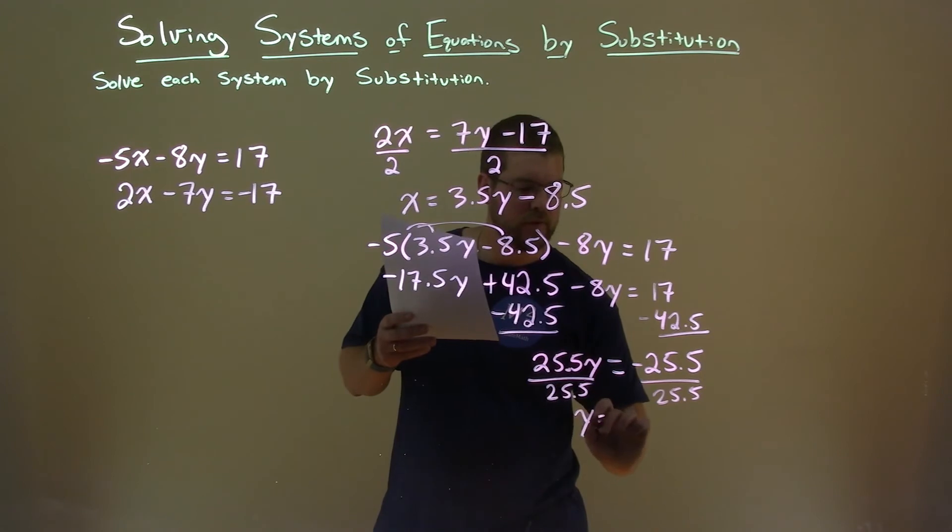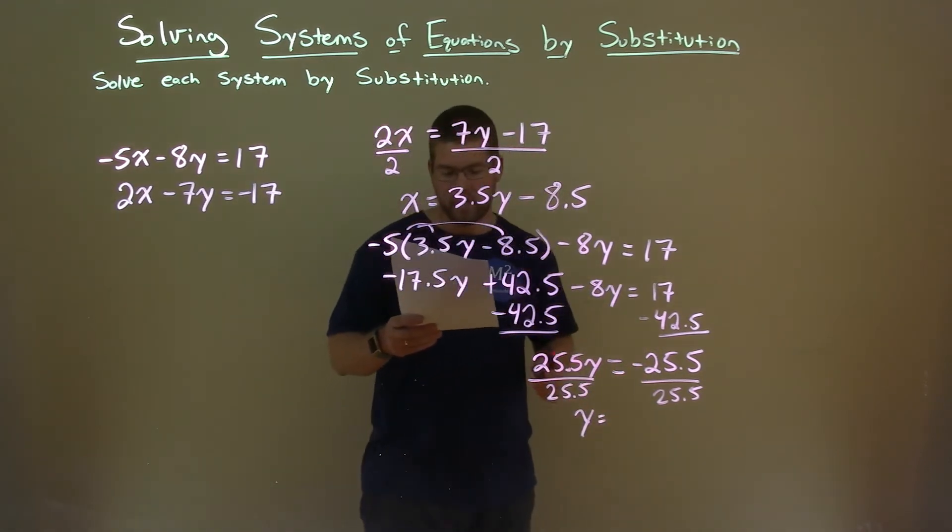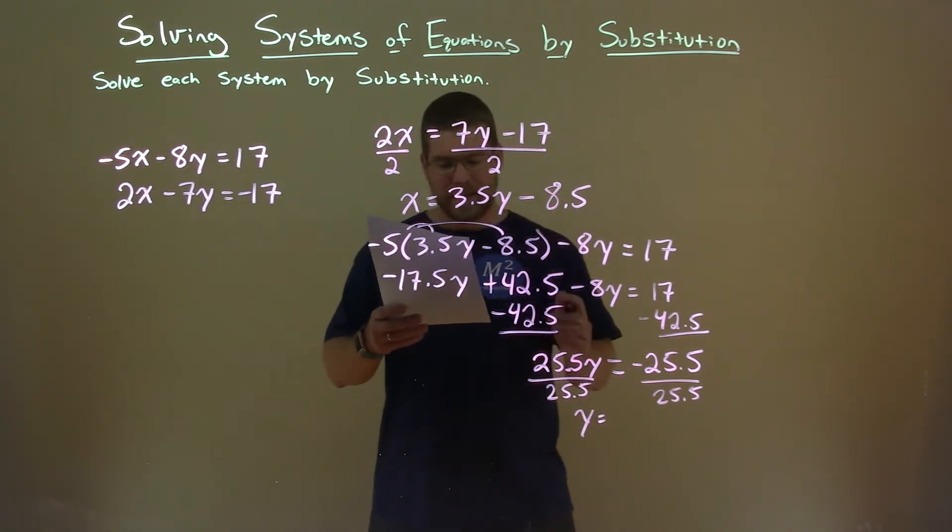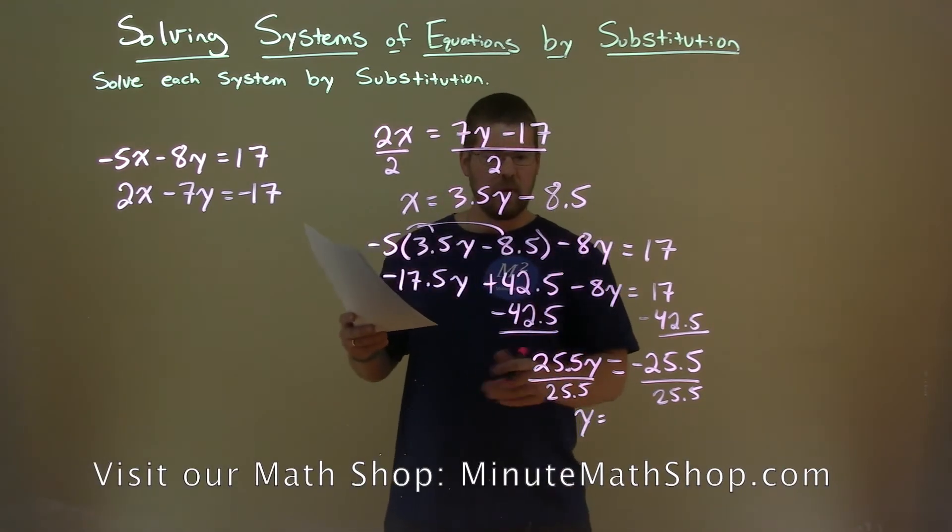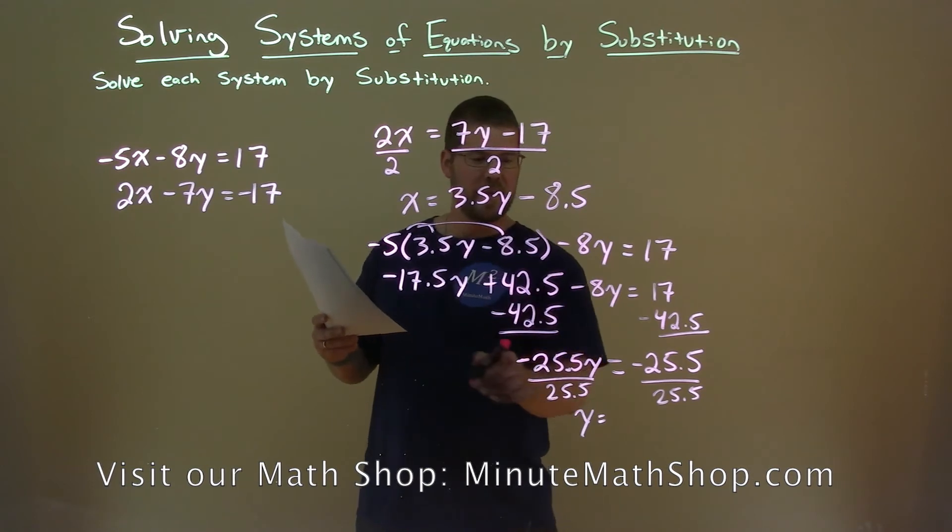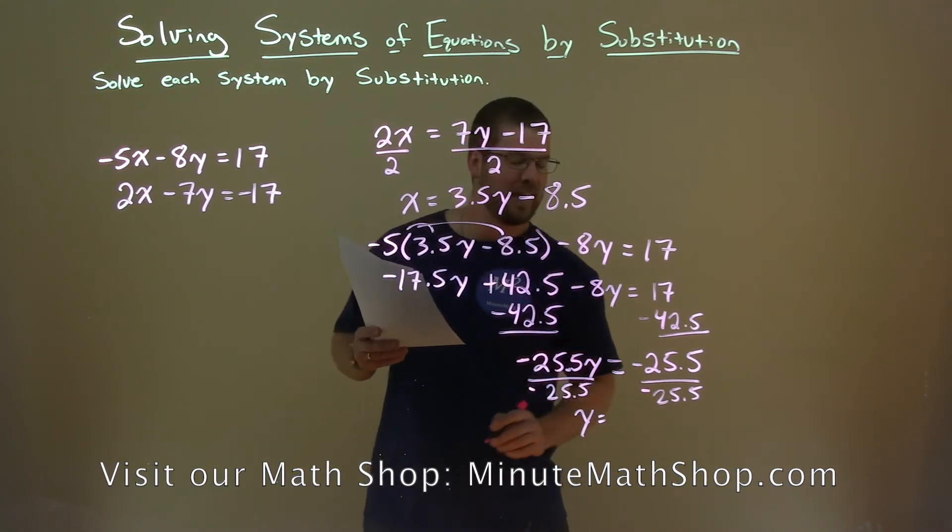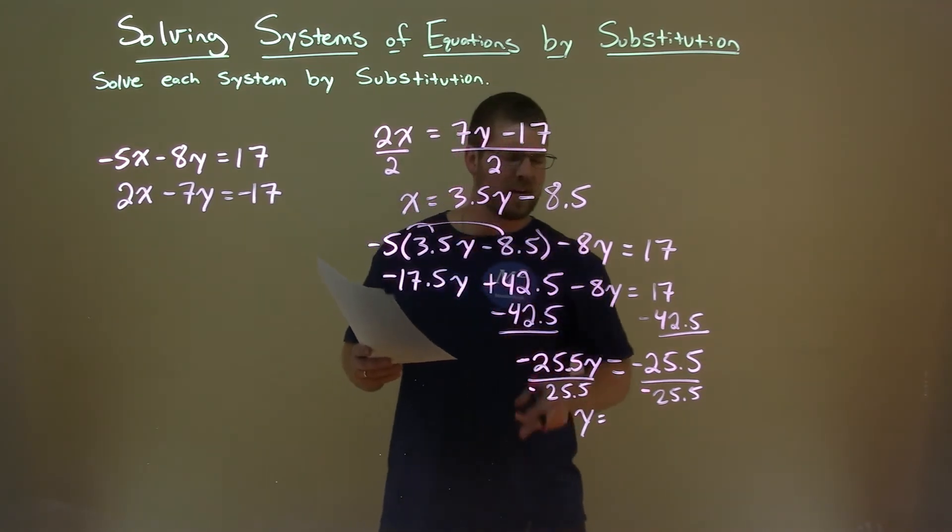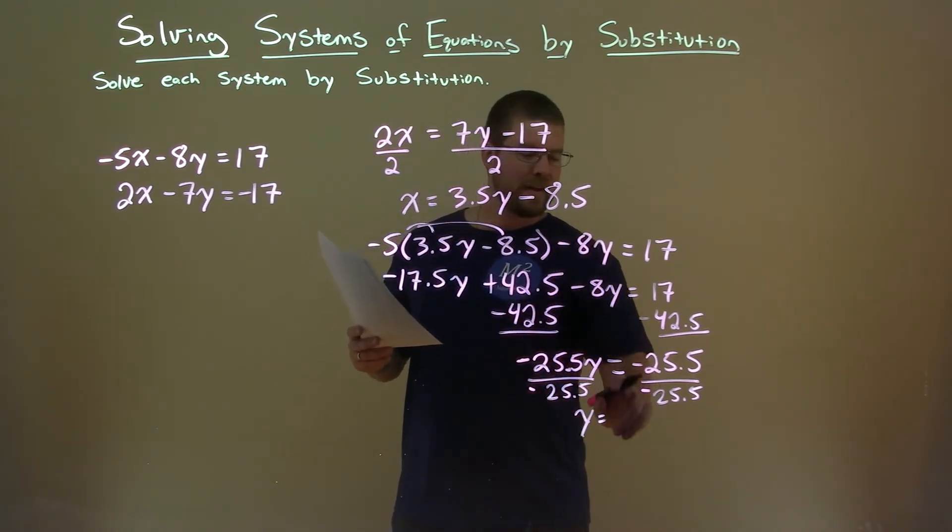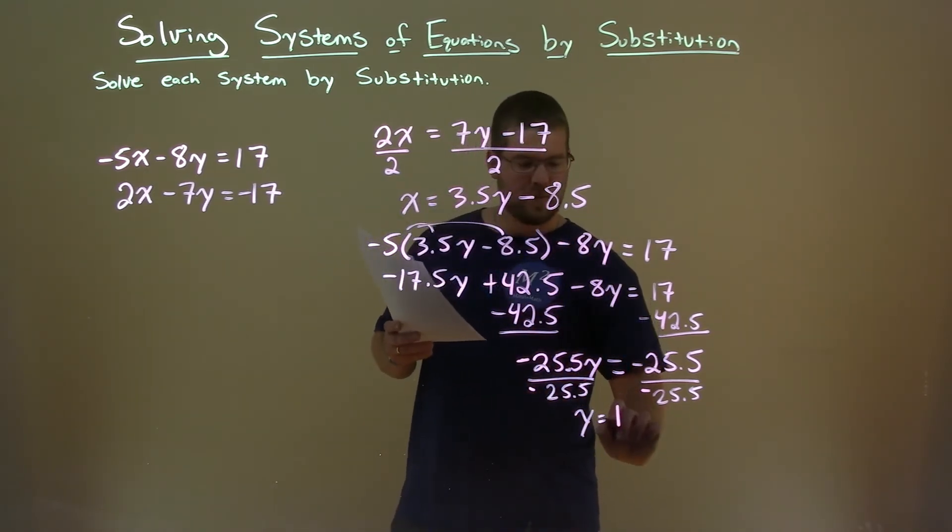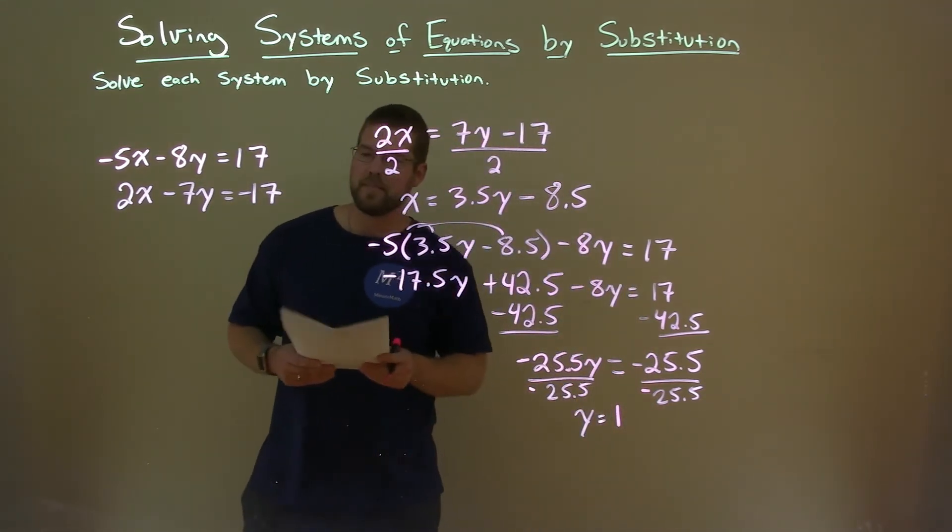And y by itself is equal to, well -25.5 divided by 25.5 is a, sorry, whoopsie, that's a negative, right? That's a -25.5, excuse me. Good thing I caught it there. If you had caught it already, let me know down below. Two negatives make it a positive. So we have positive 1 here for y. Almost messed that up. Good thing I caught it though.